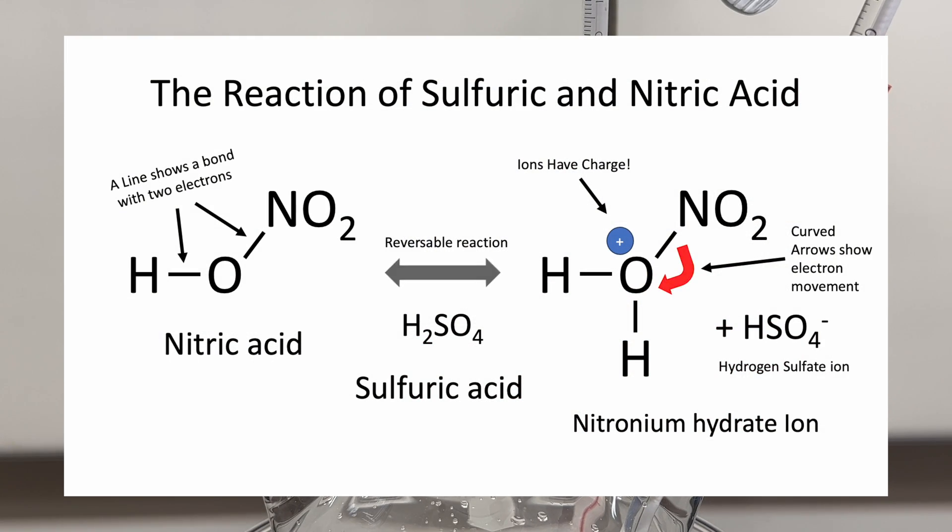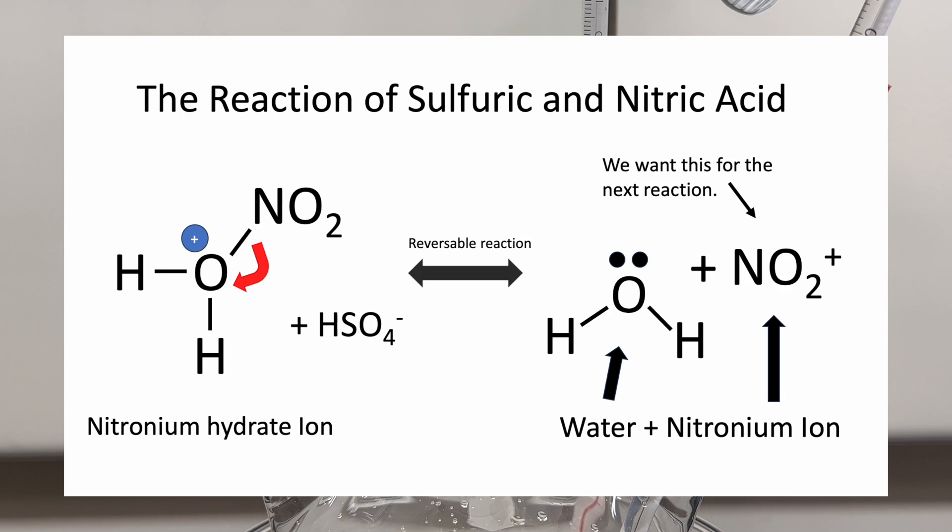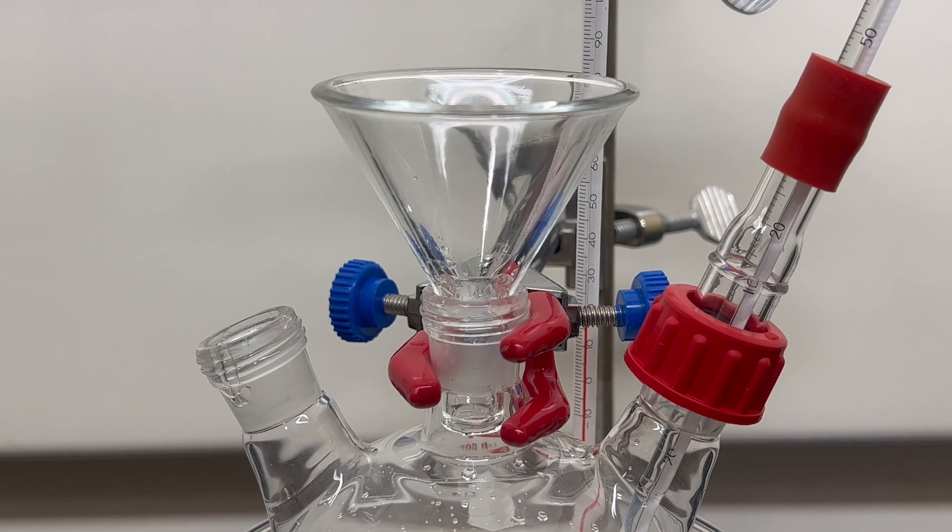The acids mixture is sometimes referred to as mixed acids. The mix is important as it forms nitronium ions, used for the reaction. The reaction produces another ion, the deprotonated form of sulfuric acid. You will see in later steps that this ion is regenerated to sulfuric acid. Now with the nitronium ions, we can begin the reaction.